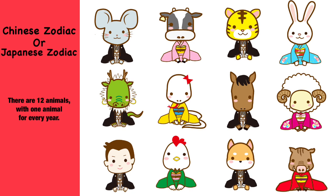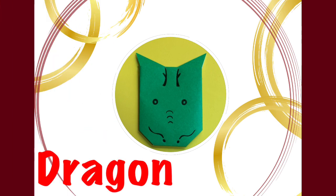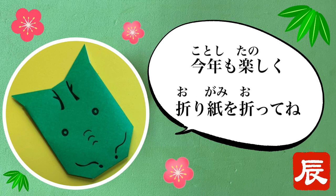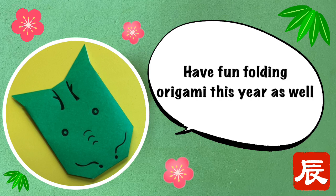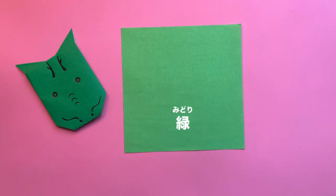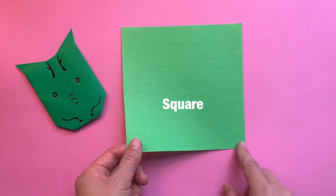Chinese Zodiac, Japanese Zodiac: Rat, Mouse, Ox, Tiger, Hare, Rabbit, Dragon, Snake, Horse, Sheep, Monkey, Rooster, Cock, Dog, Boar, Pig. This year is Tatsu, Dragon. Happy New Year! Have fun folding origami this year as well. Materials needed: Marker, Midori green paper, square, 6 inches by 6 inches, 15 centimeters by 15 centimeters.